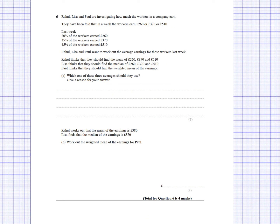In this question, Rahul, Lisa, and Paul are investigating how much workers in a company earn. Workers earn £260, £370, or £510 per week. Last week, 20% earned £260, 35% earned £370, and 45% earned £510. They want to work out the average earnings. Rahul thinks they should find the mean of £260, £370, and £510. Lisa thinks they should find the median, which would be £370.